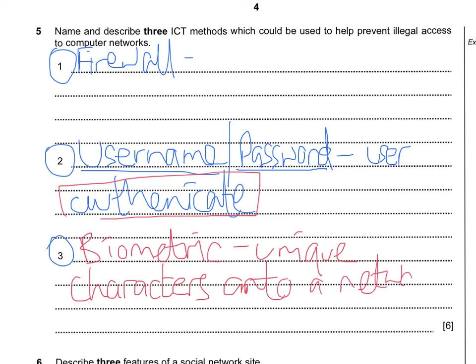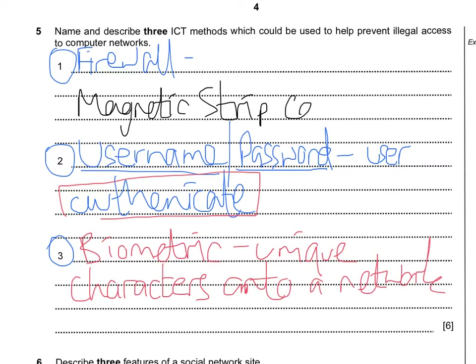As a final option, you could also talk about a magnetic strip reader. Most professional organizations have employees with an ID card. That ID card could also double up as a magnetic strip which identifies a user as they enter the network. So a magnetic strip card could be another possible answer for this scenario.